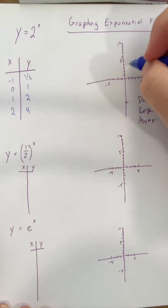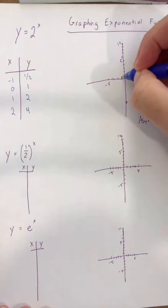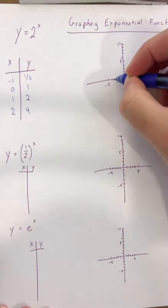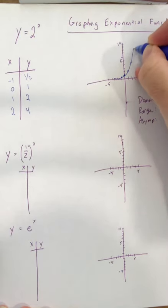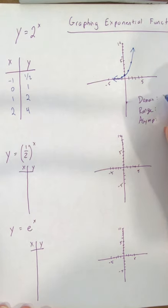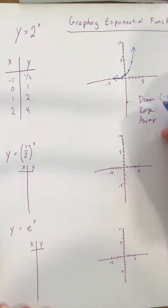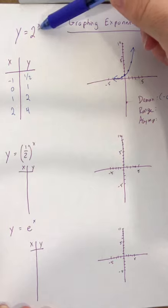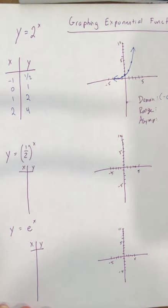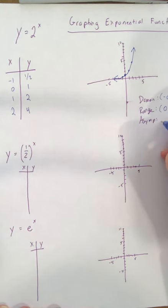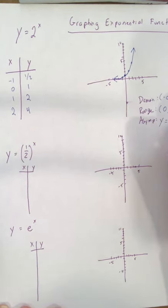So the basic parent function of the exponential would look like negative one, one half, zero, one, one, two, and two, four. So it's a function that looks like this. The domain of this function is going to be all real numbers, from negative infinity to infinity. The range does not cross the x-axis because no matter what value of x you plug in, this part can never end up being a negative number or zero. So the range would be zero comma infinity. And we do have an asymptote at y equals zero.